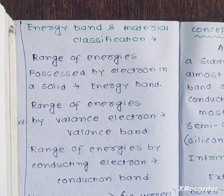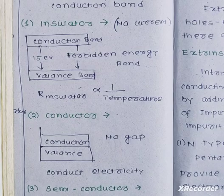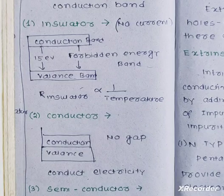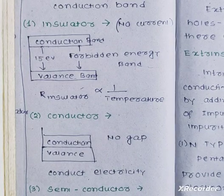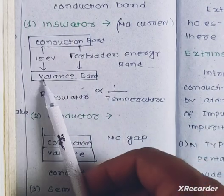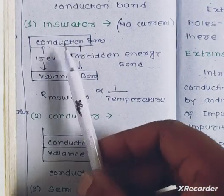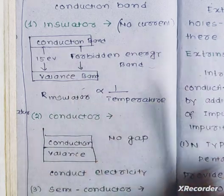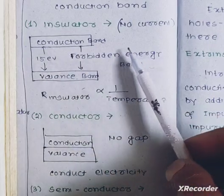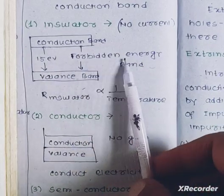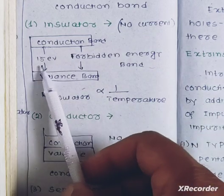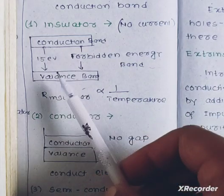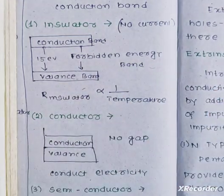The first type of material is the insulator. Looking at the diagram, the conduction band and the valence band are separated. In an insulator, there is a large gap between the valence band and the conduction band. This gap is called the forbidden energy band, and the gap is approximately 15 electron volts. Because of this large gap, electrons cannot move to the conduction band and electricity will not flow.